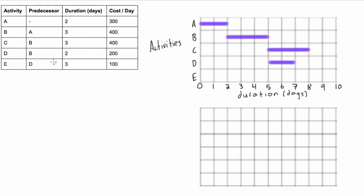Then let's look here, activity E depends on D and it is three days long, so we're going to start here and go right till the 10th day, the end of the 10th day like that.